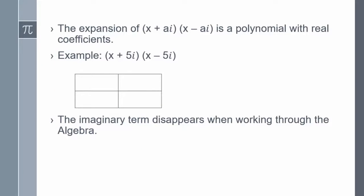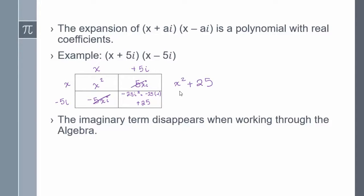In previous lessons, we've looked at the expansion of x plus ai times x minus ai, which is a polynomial with real coefficients. For example, if we take x plus 5i and multiply x minus 5i, we get x squared, then 5xi, then negative 5xi, and negative 5i times positive 5i gives us negative 25i squared. Since i squared is negative 1, we get negative 25 times negative 1, which is positive 25. Negative 5xi plus 5xi add up to 0, so we're left with x squared plus 25.